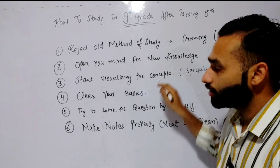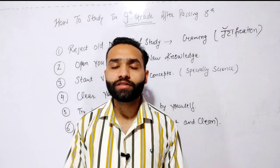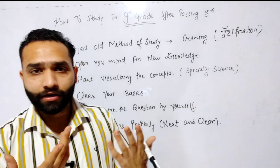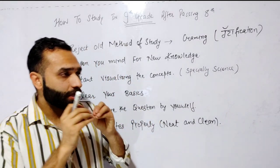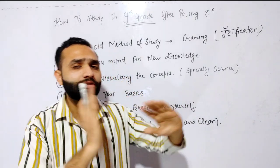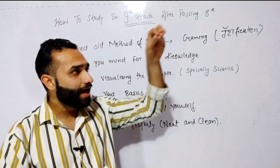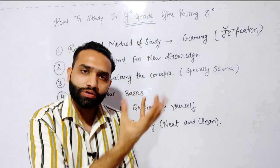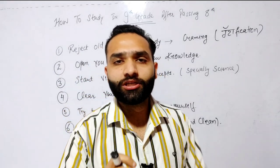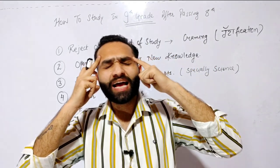Third point: start visualizing your concept. You have to start visualizing within your mind, within your brain. For example, if a car is moving with a speed of 10 meters per second, you think about what 10 meters per second looks like. If a stone is dropping from a certain height, you visualize that. Whatever concept — especially in physics or science — you have to visualize it in your mind.